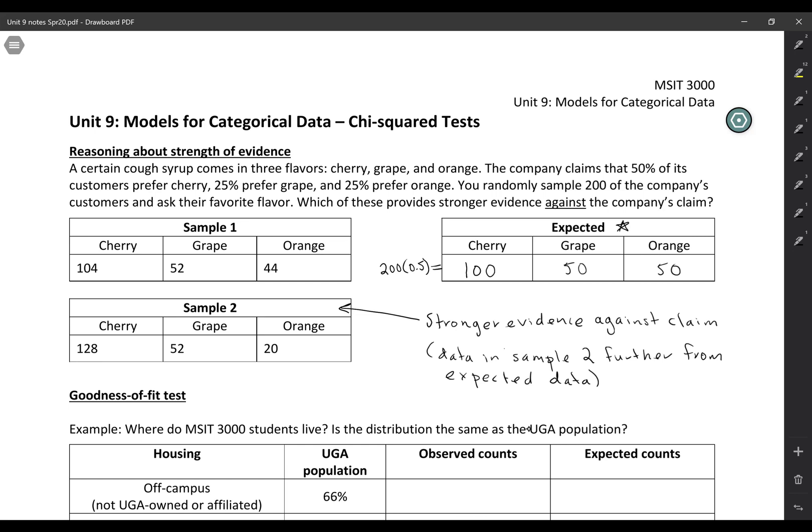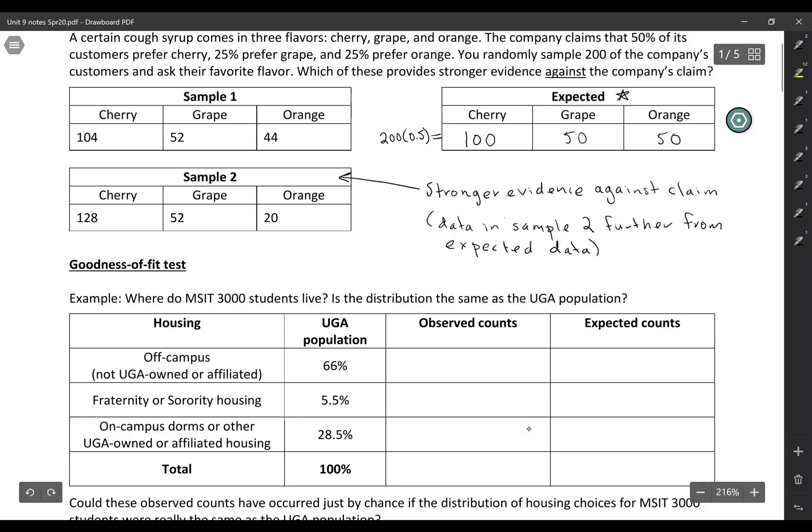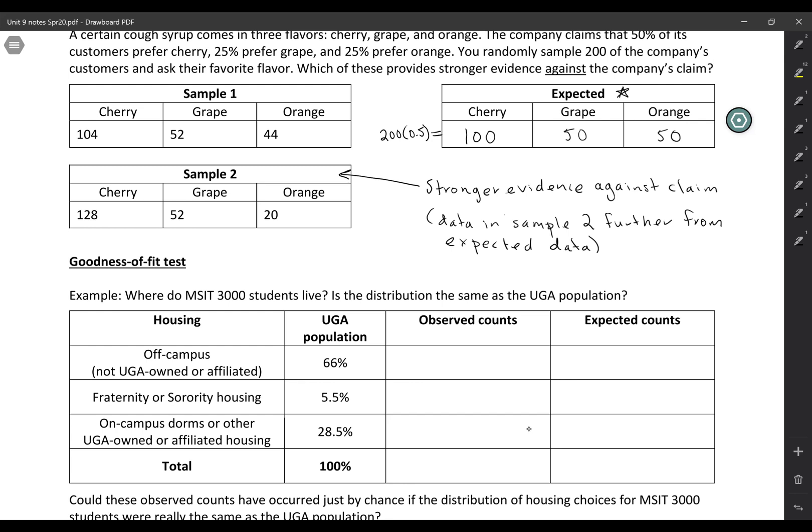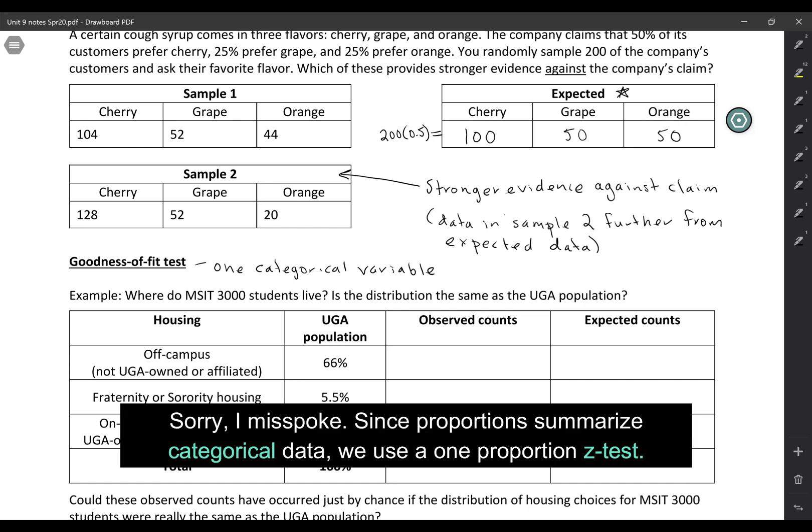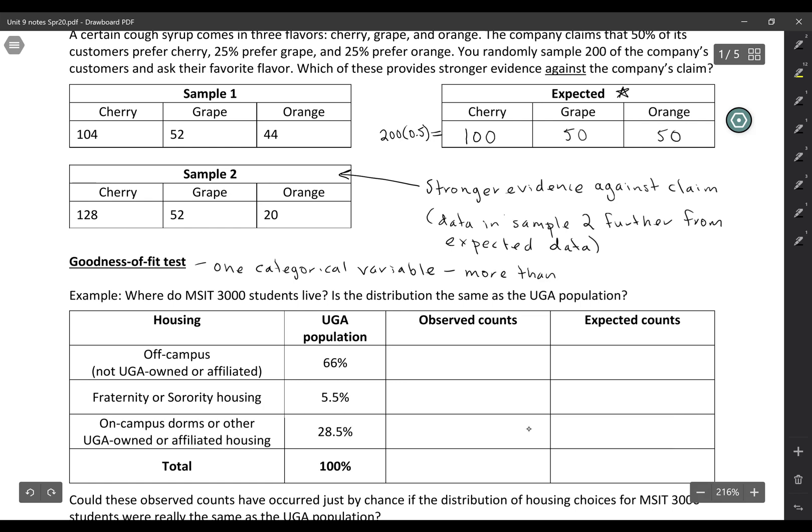Okay, so we're going to kind of build on this reasoning to get a little bit more technical with it. So this is a goodness of fit test. A goodness of fit test is a way to analyze one categorical variable. So we've actually seen one categorical variable in the past. We did a one proportion t-test. So what makes this different from a one proportion t-test is that here we have more than two categories.